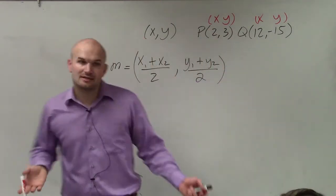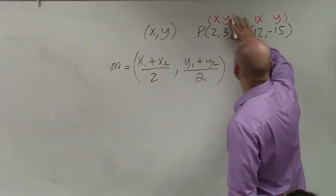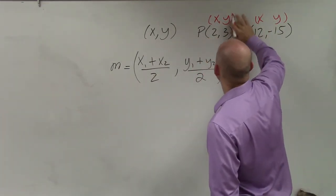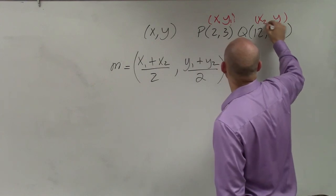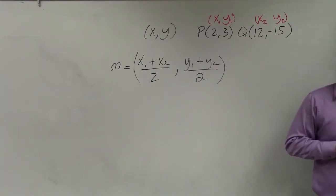So basically, it doesn't matter which one you do. Just make sure you guys label them. If you have x1, y1, x2, y2, don't do x1, y2 for the same coordinate point. Just label them as they are. Now I can simply just plug them into my equation.